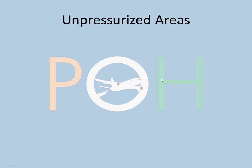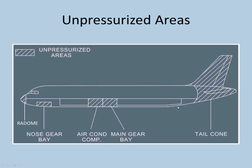There are some unpressurized areas in the aircraft: the tail cone, main gear bay, air conditioning compartment, nose gear bay, and radome. These are voluminous areas, and pressurization comes at a fuel cost. Rather than burning more fuel to pressurize them, Airbus made them structurally strong to handle the stress of differential pressure. As a pilot, we just need to know which areas these are.